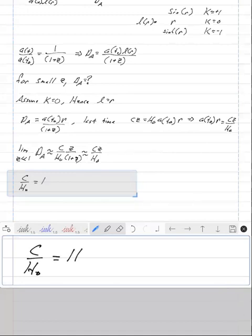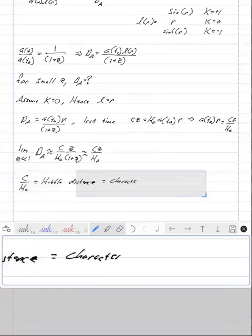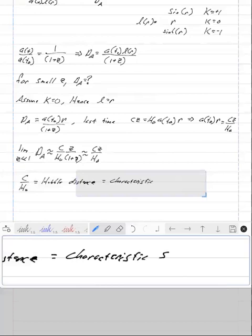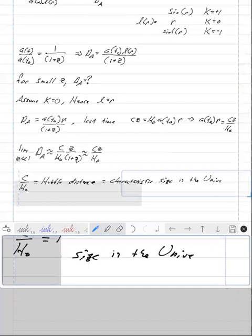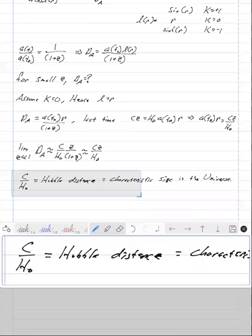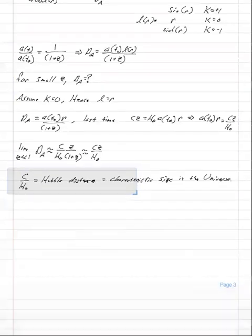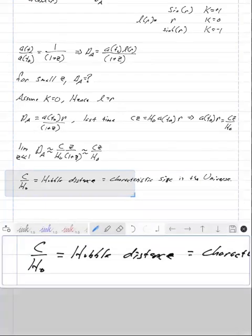This is called the Hubble distance, and it is a characteristic size in the universe. Roughly since one over H naught is roughly the age of the universe and C times that age gives you roughly the size of the universe. Or it gives you the distance that light can travel in that time during the age of the universe. So it gives you roughly the observable size of the universe.